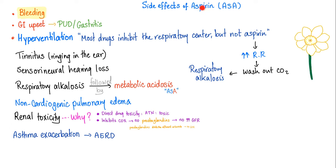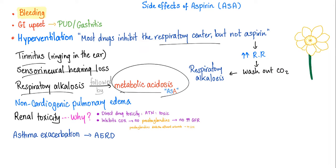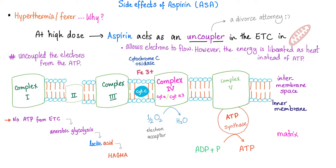What are the side effects of aspirin? Bleeding, GI upset, peptic ulcer disease and gastritis, hyperventilation — because aspirin stimulates the respiratory center — tinnitus, sensorineural hearing loss, respiratory alkalosis followed by metabolic acidosis, which I've discussed in the previous video. Non-cardiogenic pulmonary edema, renal toxicity, asthma exacerbation.